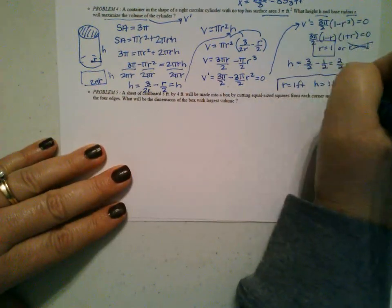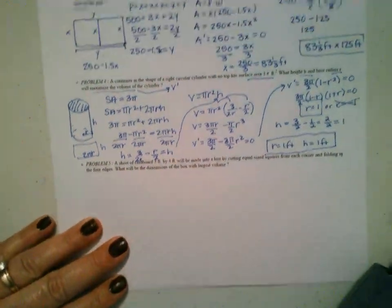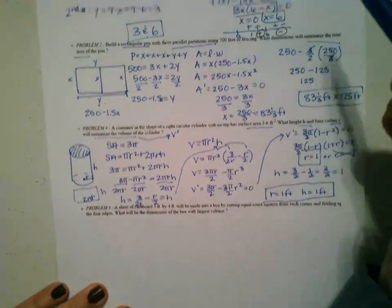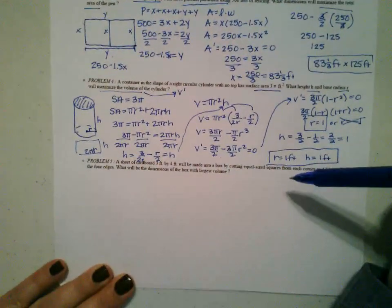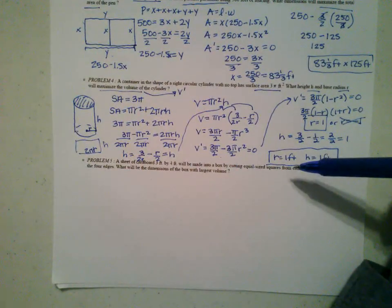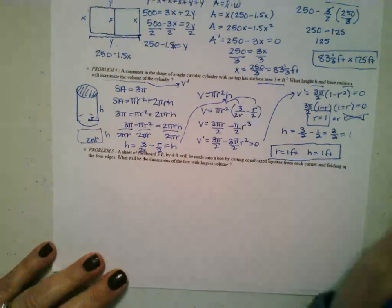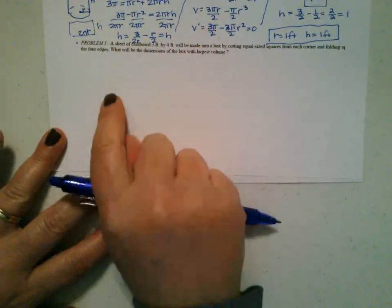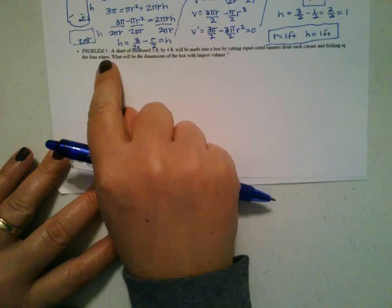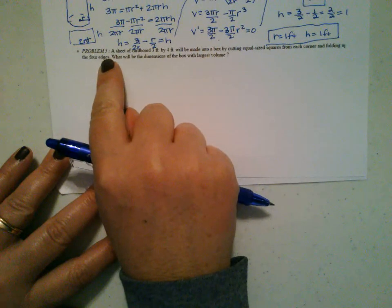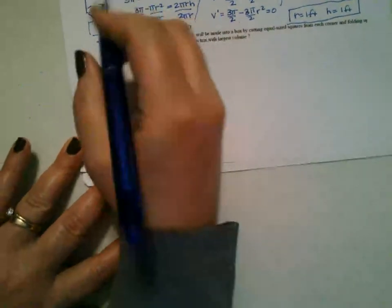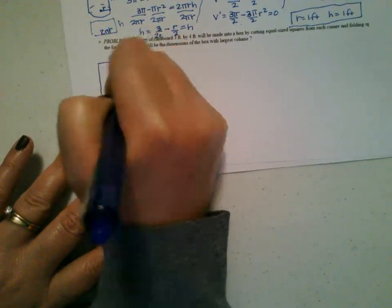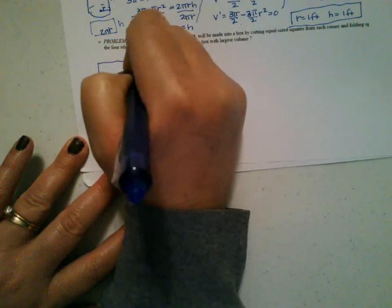Hopefully you can see that I've done all of these without a calculator, and that's what you want to try to do — as much as possible without a calculator. All right, the next one, problem number 5: a sheet of cardboard is 3 feet by 4 feet.